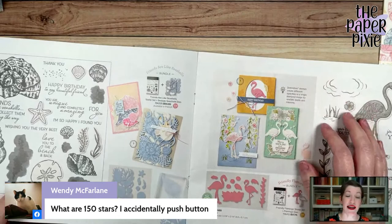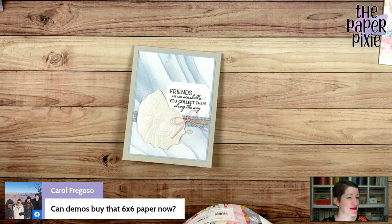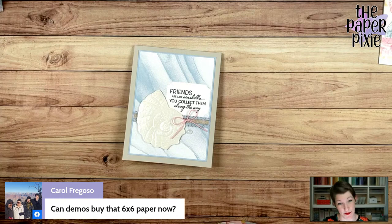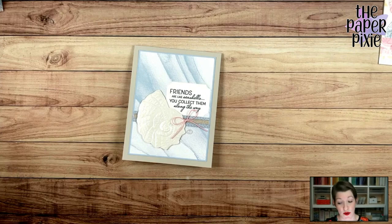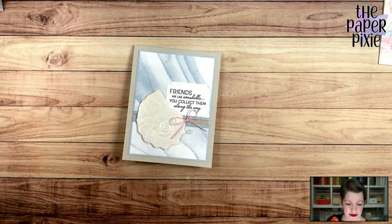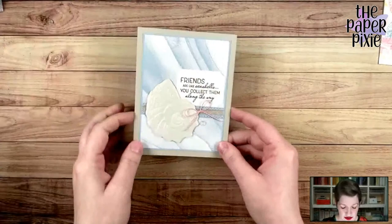We've got a stamp set, a set of dies, a 3D embossing folder, these awesome opal rounds, stickers which we're going to use today, the pearlescent specialty paper, and this beautiful designer series paper. So pages 40 and 41, and then you can see even more detail on page 42.